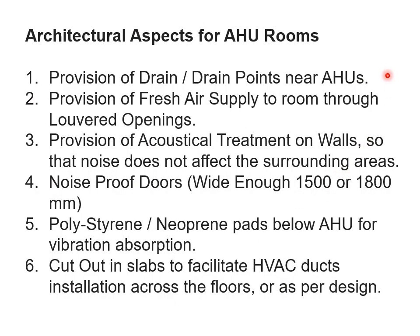Architectural aspects to be considered while planning AHU rooms include: provision of drain points near AHUs, provision of fresh air through louvered openings, acoustical treatment on walls so noise does not affect surrounding areas, noise-proof doors of 1.5 to 1.8 meters width to facilitate movement of large equipment, mounting AHUs over rubber, polystyrene, or neoprene pads to absorb vibrations, and planning shafts or cutouts in slabs to facilitate HVAC duct installation across floors as per design.